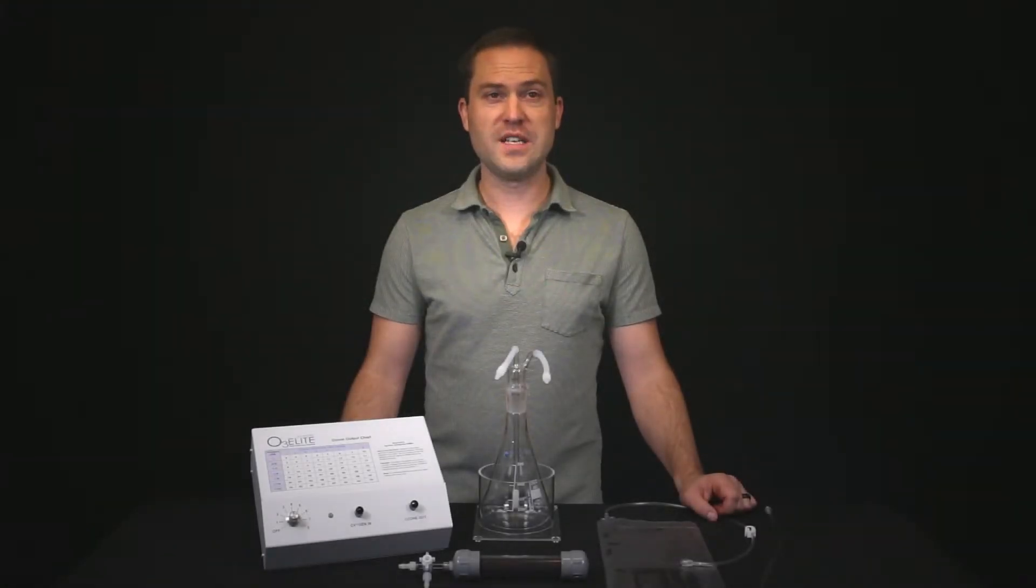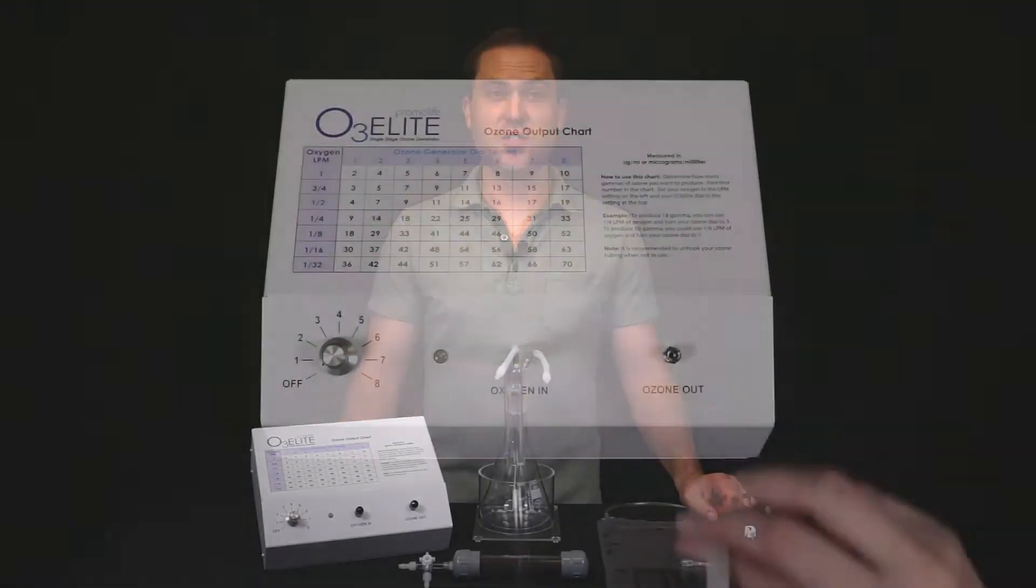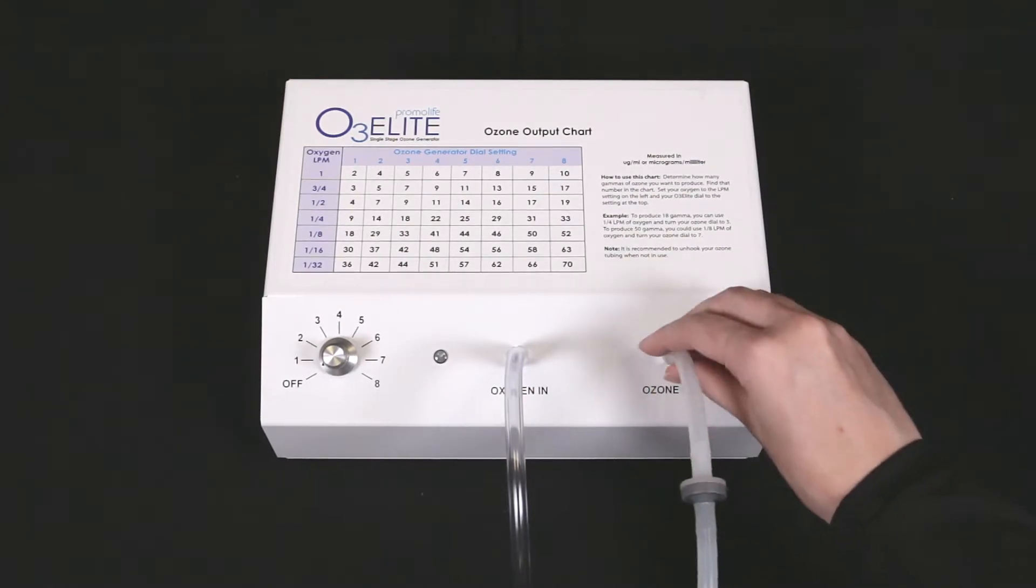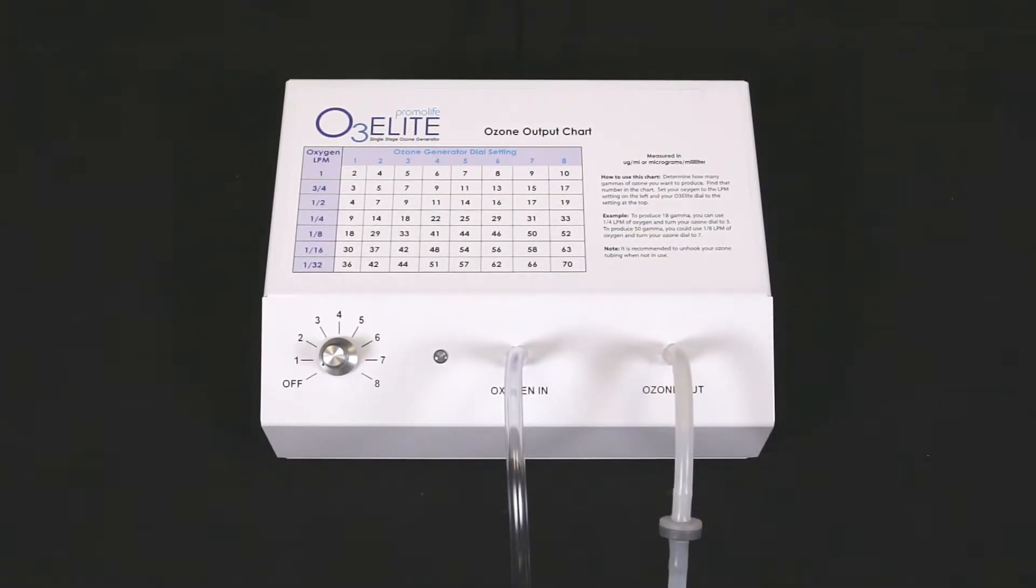For this process, you will first need to set up your humidifier. To start, you will need to connect the tubing with the checked valve and attach tubing to the ozone outport of the ozone generator.